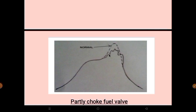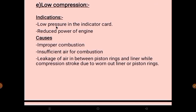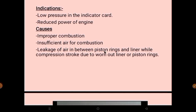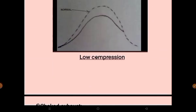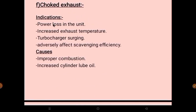The fifth irregularity is low compression. As the name suggests, the indication is simply low pressure in the indicator card and reduced engine power. Causes include improper combustion, insufficient air supply, and leakage of air between piston rings and liner during the compression stroke due to worn-out liner or piston rings. In the graph, the peak pressure is much lower than normal.